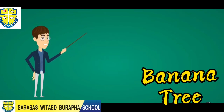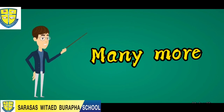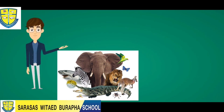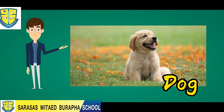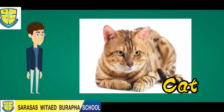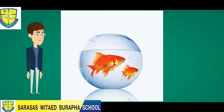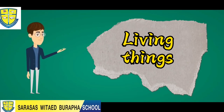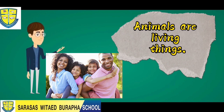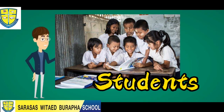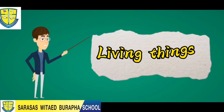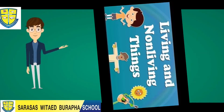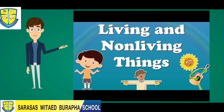Now let's review. Plants are living things, just like a rose, banana tree, coconut tree, and more. Next, animals are also living things, just like your dog, your cat, and even your fish. Lastly, people are also living things — for example, the students and even the teachers.